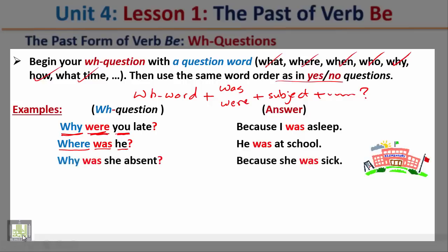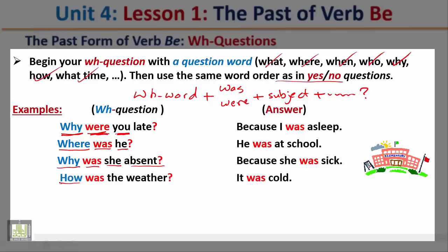'Why was she absent?' We start with the question word, followed by the verb, then the subject, and complete the question. The answer: because she was sick. 'How was the weather?' We start with the question word, followed by the verb, then the subject. The answer: it was cold.